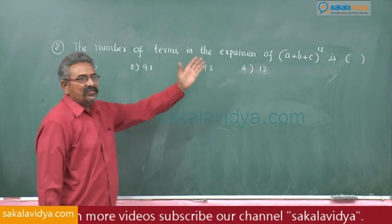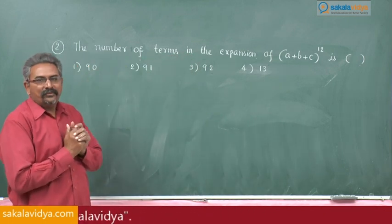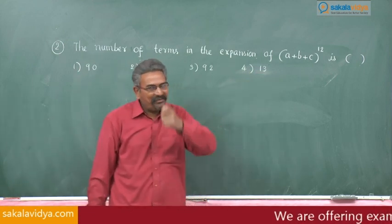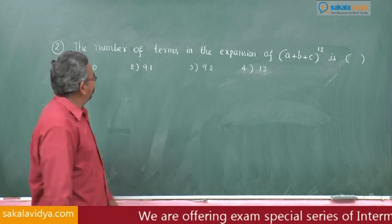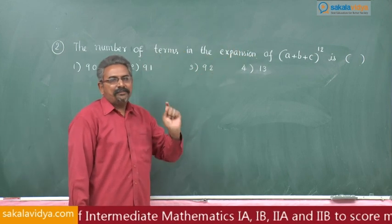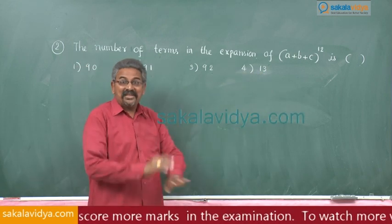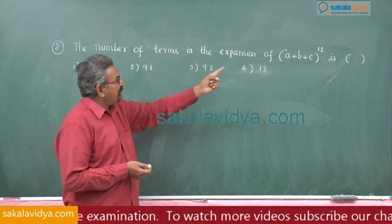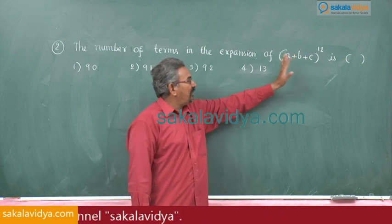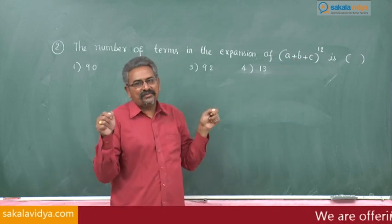Just see the question. Generally in the examination one may be tempted to write the answer 13. How? See, in binomial theorem you might have studied if you want to find out number of terms of the expansion (x + y)^n is n + 1. So 12 + 1 = 13 they will write it. That is absolutely wrong. It is actually a multinomial, here we have 3 terms, not binomial.